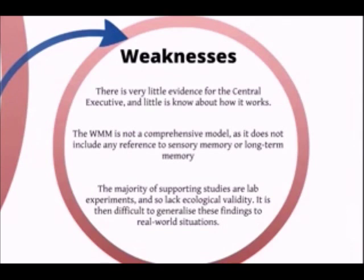One of the key weaknesses of the working memory model is that very little is known about the central executive, and it is very difficult to study empirically. This is problematic because it is one of the central components of the model. Also, the working memory model is not comprehensive, as it doesn't include any reference to sensory memory or long-term memory, or the transfer of information between different stores. Lastly, the majority of supporting studies are lab experiments and so they can be said to lack ecological validity, making it difficult to generalise findings to real-world situations.